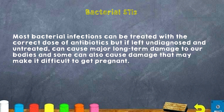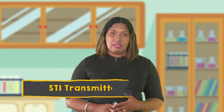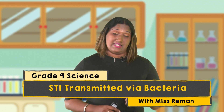Most bacterial infections can be treated with the correct dose of antibiotics, but if left undiagnosed or untreated, they can cause major long-term damages to our bodies, and sometimes they can cause damages that make it difficult to get pregnant in the future. Now, what are some types of bacterial STIs? We have Chlamydia, Gonorrhea, and Syphilis. Today we are going to look at each of these more in depth.